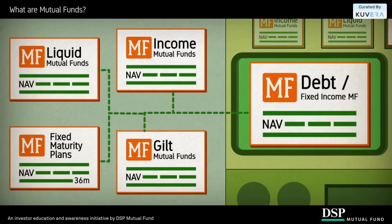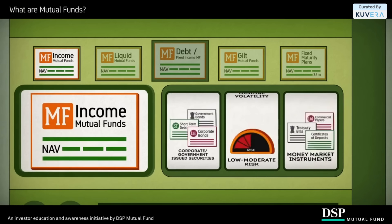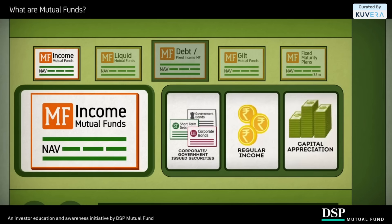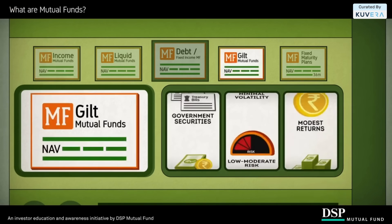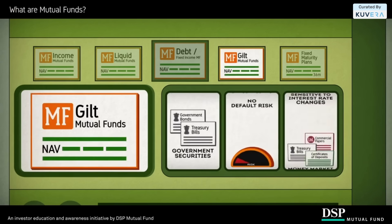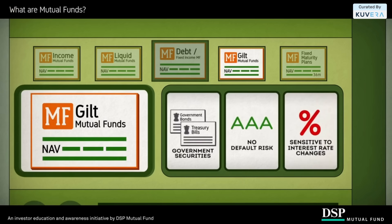Income funds primarily invest in a mix of corporate bonds and government-issued securities, seeking to provide returns in the form of income with potential capital appreciation. Gilt funds invest in government securities of medium to long-term maturities. They do not carry default risk; however, prices and returns over the short term — say less than one year — can be sensitive to changes in interest rates.